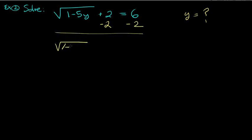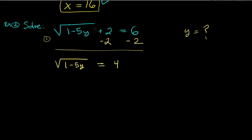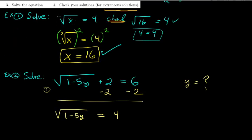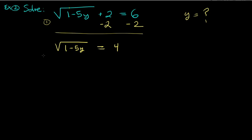Step one: isolate the radical. The square root is on the left side, but the 2 does not have a square root with it, so we subtract 2 from both sides. That gives us the square root of (1 minus 5y) equals 4. Now the radical is isolated.